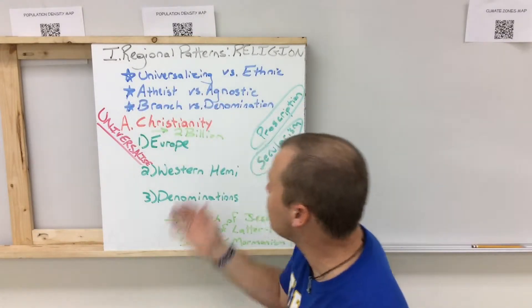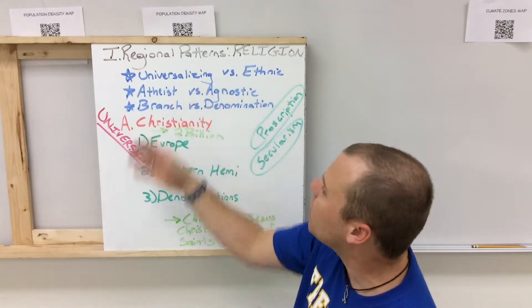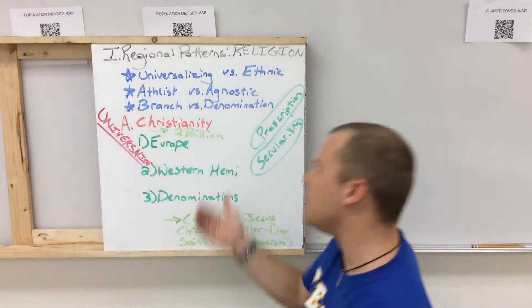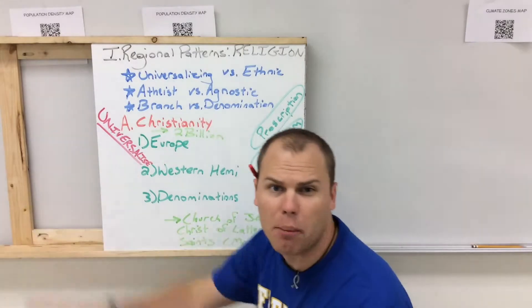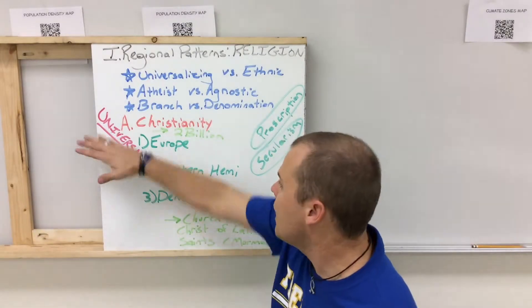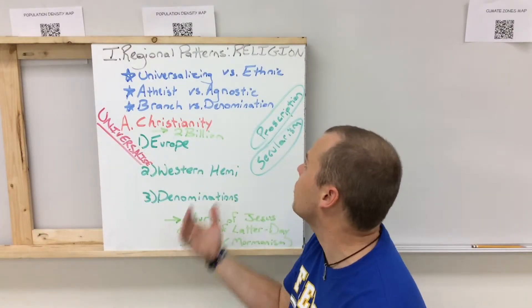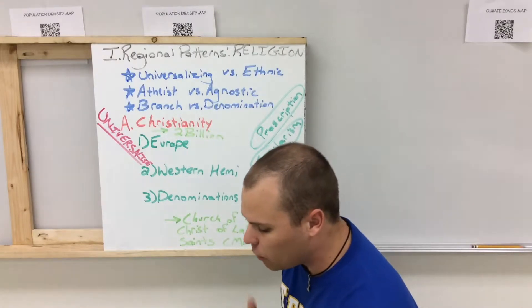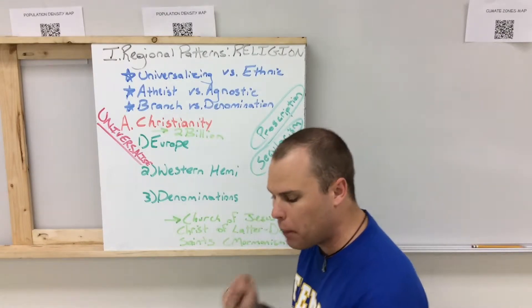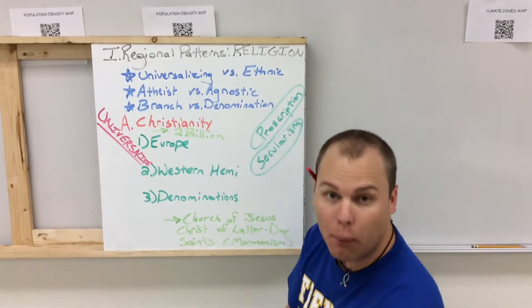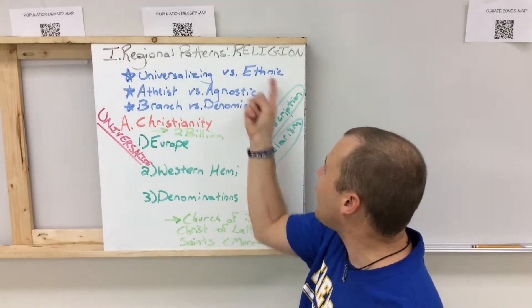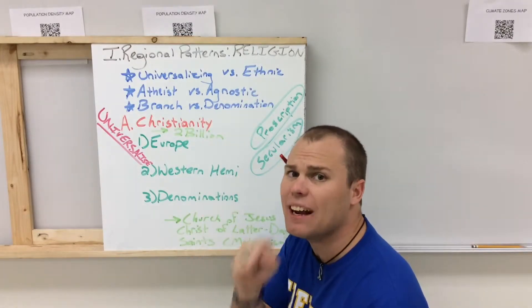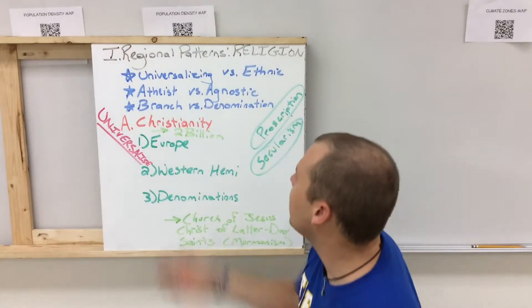Universalizing religions are the religions that are attempting to be global and are attempting to appeal to all people wherever they are, so you're going to see them all over the place. Ethnic religions, on the other hand, are appealing primarily to only one group of people or one ethnicity, and you're generally going to see them in one place.